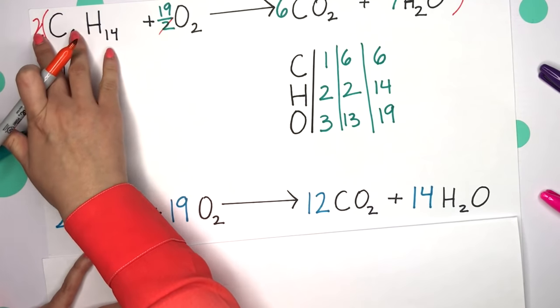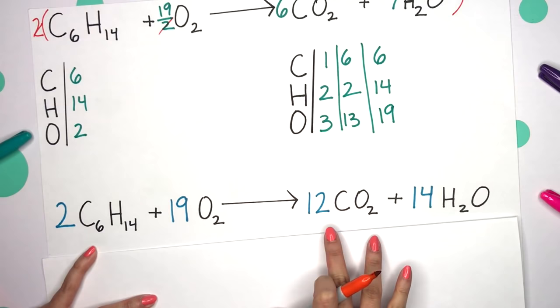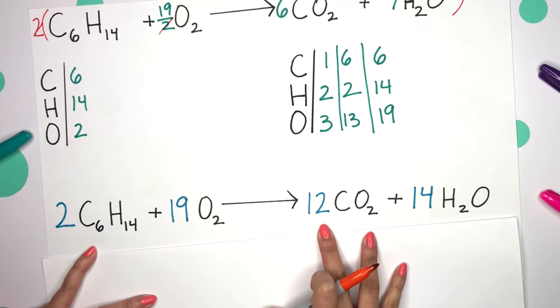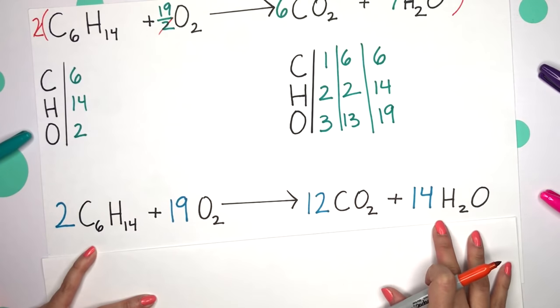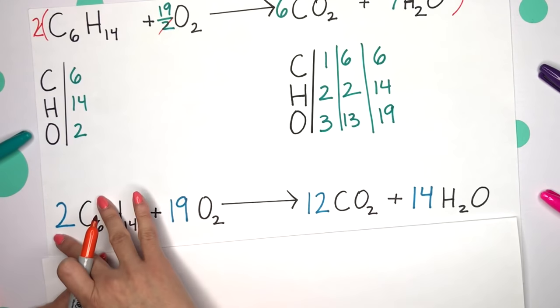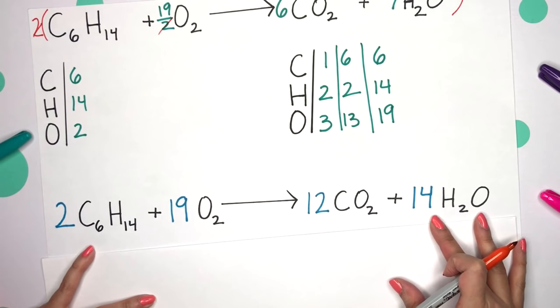And we'll keep going. Distributing that two to this six would give us 12 for CO2. And lastly, two times that seven would give us 14 for water. And that is our balanced equation using fractions.